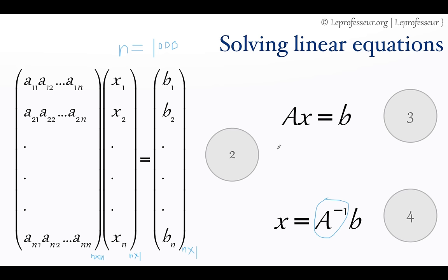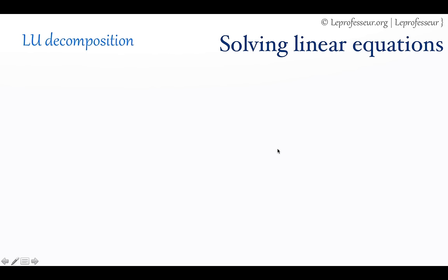There is a technique called LU decomposition. LU decomposition, in simple terms, is that you convert the big A matrix into two parts — one is L and one is U — multiplied together. L means lower triangular matrix and U means upper triangular matrix. Very simple.